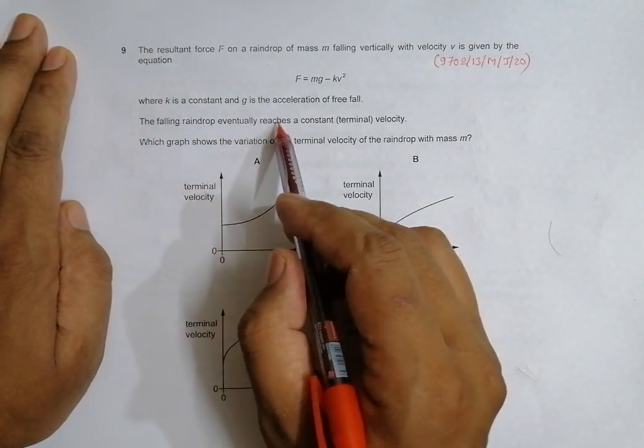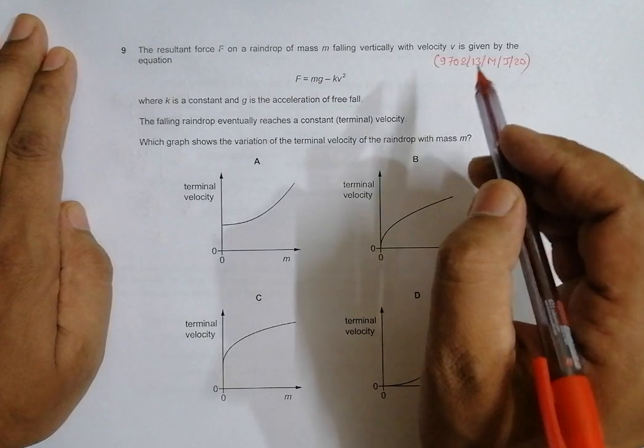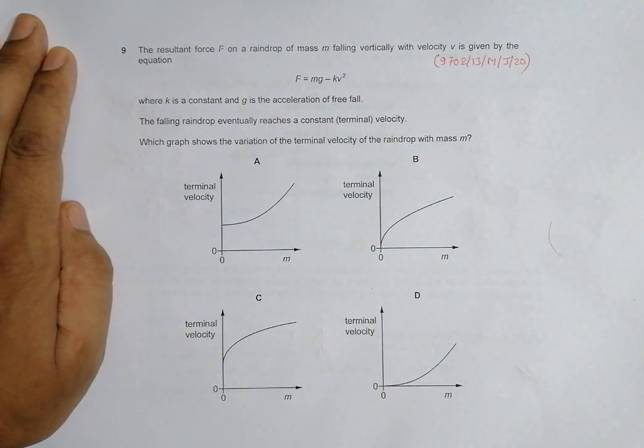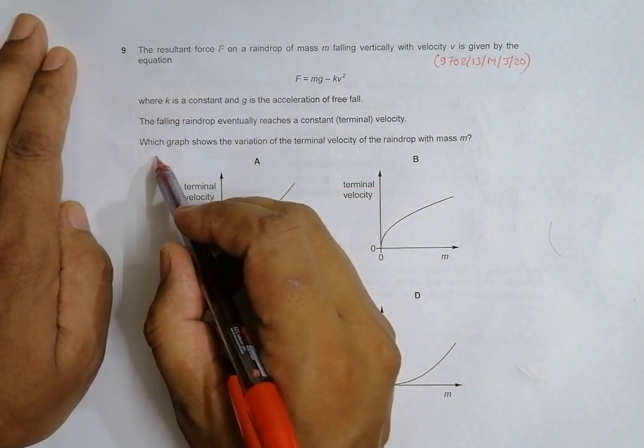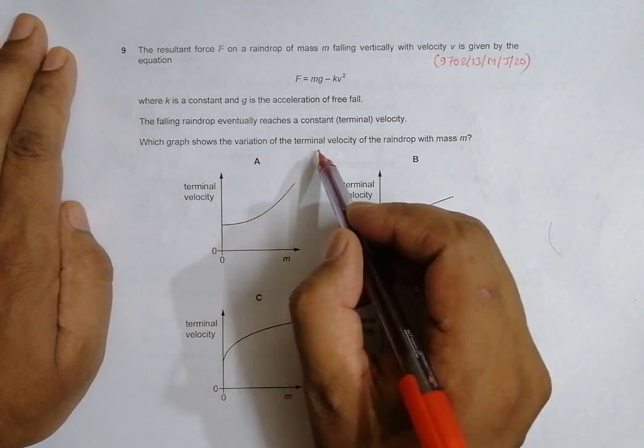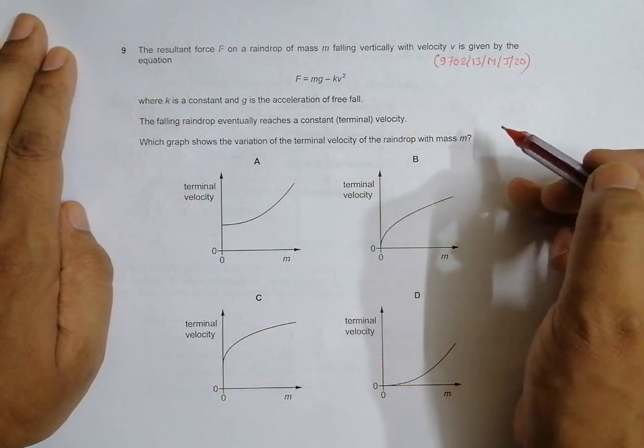The falling raindrop eventually reaches a constant velocity because of the opposing forces. Now which graph shows the variation of the terminal velocity of the raindrop with mass M?